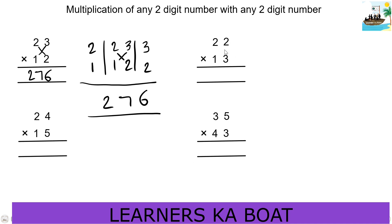Now let's do this question. First: 2×3 is 6. Next: 2×2 is 4, plus 1×3 is 3 and 1×2 is 2, so 6 plus 2 is 8. Then 8 is 8. Next, left side 2: 2×1 is 2. The answer is 286.